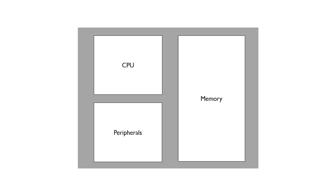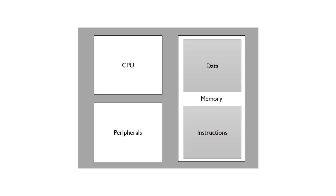This shows a very simple block diagram of a microcontroller. Inside of it, we've got a CPU, memory, and peripherals. Inside the memory, there are actually two things that are typically stored: data and instructions.